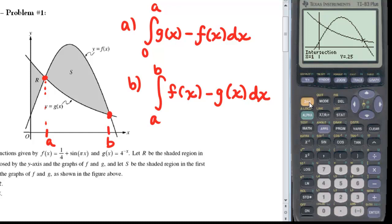I want to store that X coordinate, so hit second and the mode key to go back to your home screen, and hit store, alpha, and I'll select B this time to store that intersection point, and hit enter. So now those values are stored in my calculator until I choose to store other values.